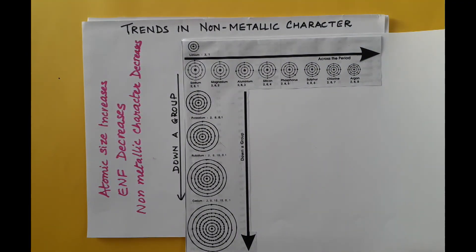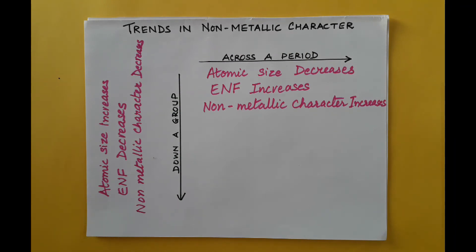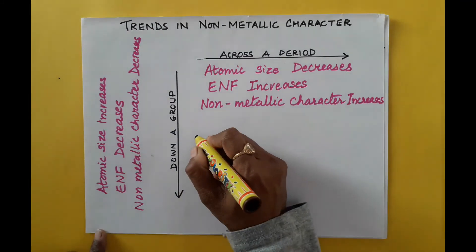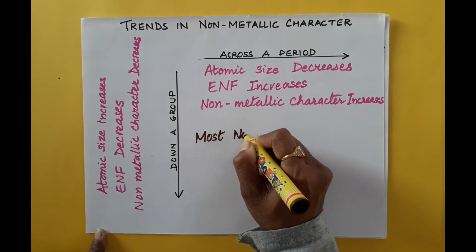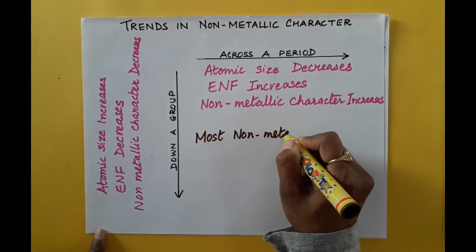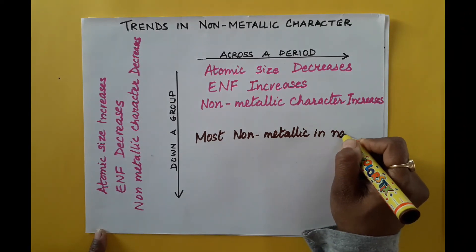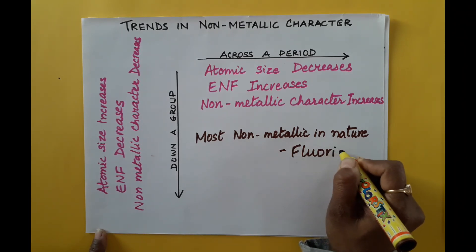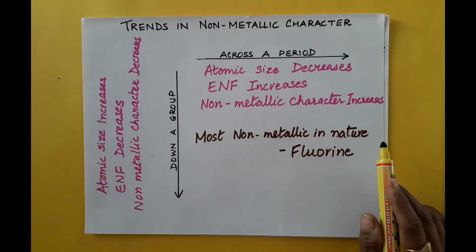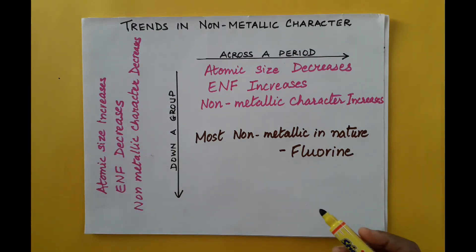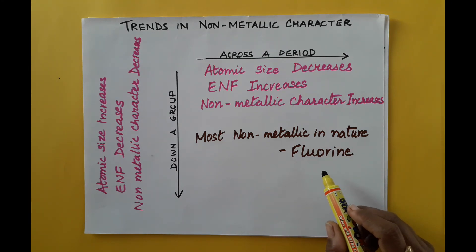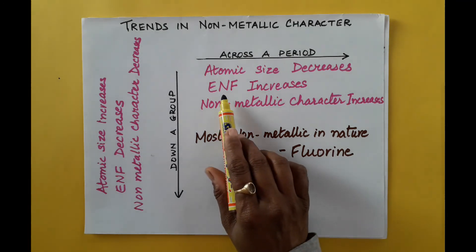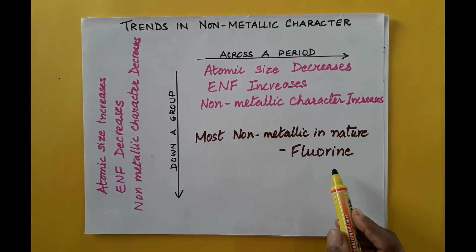The most non-metallic element in the entire periodic table is fluorine. Across the period, atomic size decreases, and noble gases are slightly larger than halogens. Fluorine, being the smallest of all elements and having the highest effective nuclear force, can most easily gain electrons, making it the most non-metallic element.